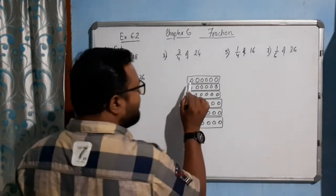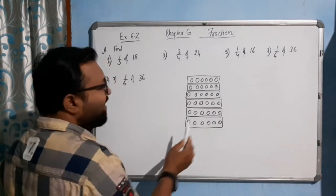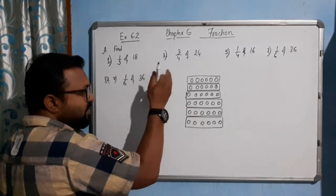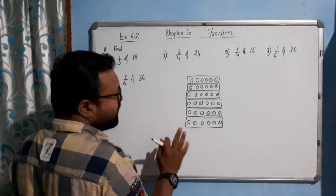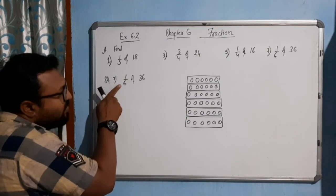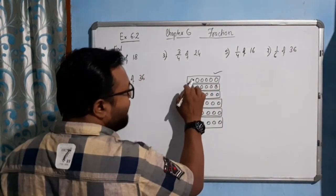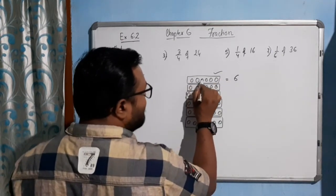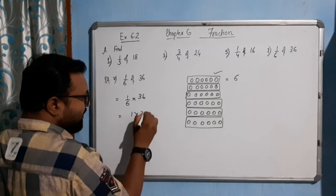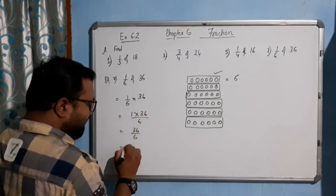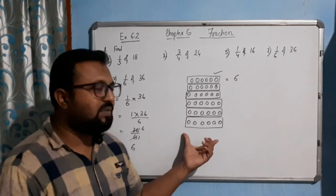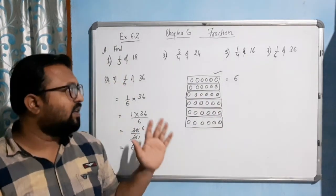36 sweets — 36 is divided into 6 parts, 6 packets. 36 sweets have to be distributed equally in 6 packets. Each packet contains 6 sweets. So 1 packet out of 6 packets — how much are we getting? 1 packet out of 6 packets means 1 packet with 6 sweets: 1, 2, 3, 4, 5, 6. By calculation: 1 by 6 into 36 — cancel it out, 6 times 6 is 36, we get 6. By calculation also we are getting 6, and by diagram we have also shown 6.